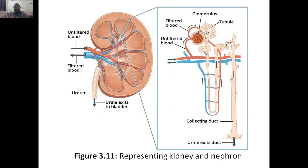We have a representation of the kidney and the nephron here. Through the left part you can see the kidney, and on the right part you can see the nephron. The kidney receives unfiltered blood — that means the kidney does filtration.